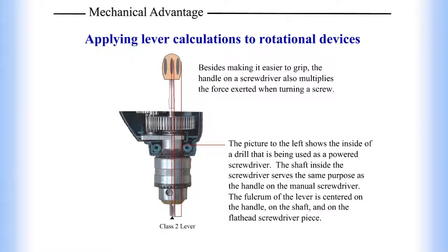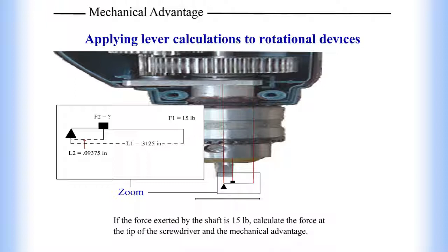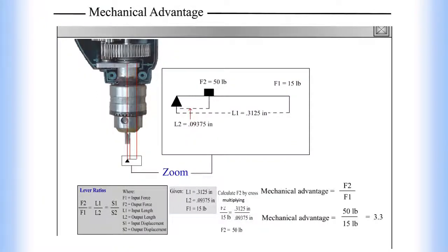Applying lever calculations to rotational devices: besides making it easier to grip, the handle on a screwdriver also multiplies the force exerted when turning a screw. The picture to the left shows the inside of a drill being used as a powered screwdriver. The shaft serves the same purpose as the handle on a manual screwdriver, with the fulcrum centered on the shaft and the flathead screwdriver piece. If the force exerted by the shaft is 15 pounds, we know F1 equals 15 pounds, L1 equals 0.3125 inches, and L2 equals 0.09375 inches.